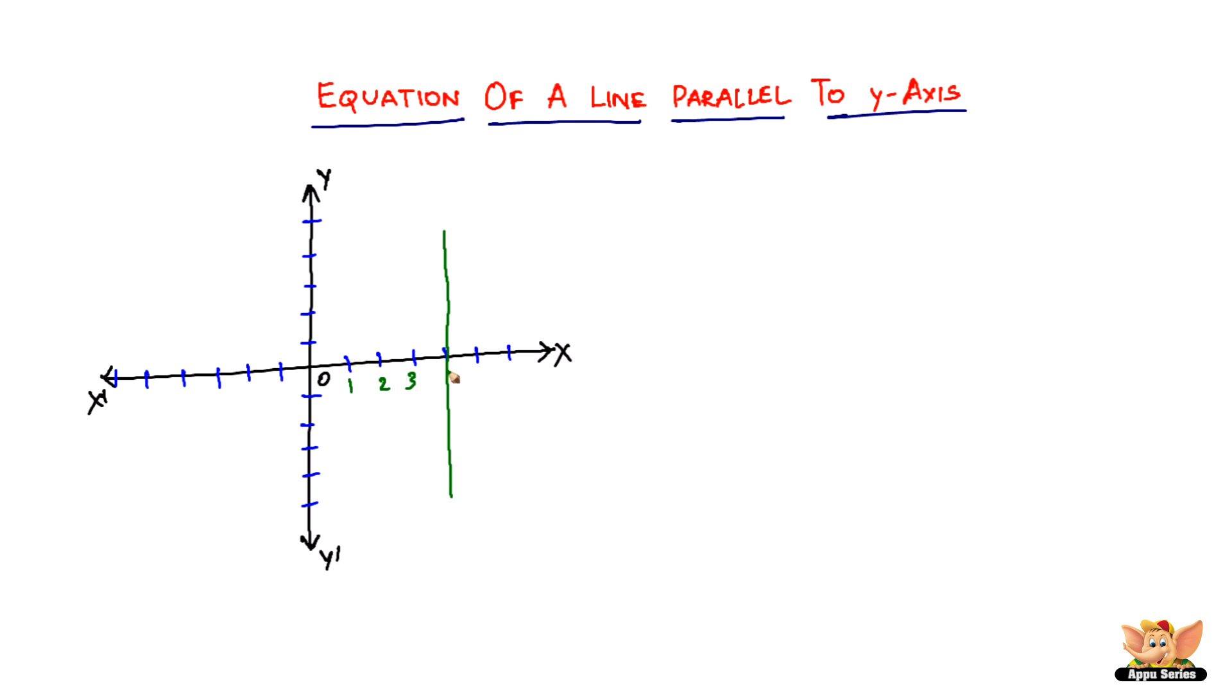So it should be 1, 2, 3, 4, right? So the distance from the y-axis to this line is exactly 4 units. So the equation of this line will be equal to, it will not be y equal to 4.